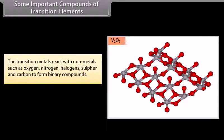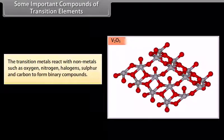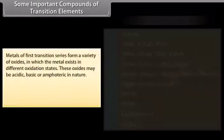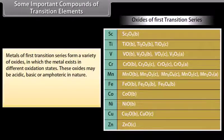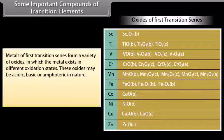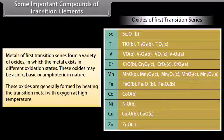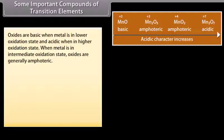The transition metals react with non-metals such as oxygen, nitrogen, halogens, sulfur, and carbon to form binary compounds, some of which find important industrial applications. Metals of the first transition series form a variety of oxides in which the metal exists in different oxidation states. These oxides may be acidic, basic, or amphoteric in nature. These oxides are generally formed by heating the transition metal with oxygen at high temperature. Oxides are basic when the metal is in a lower oxidation state and acidic when in a higher oxidation state. When the metal is in an intermediate oxidation state, oxides are generally amphoteric.